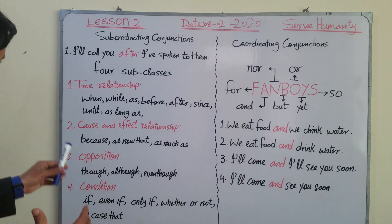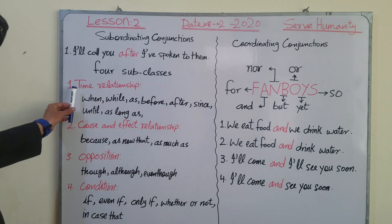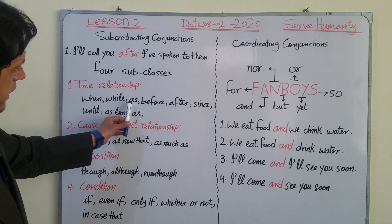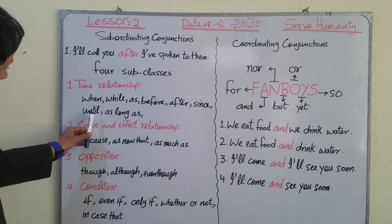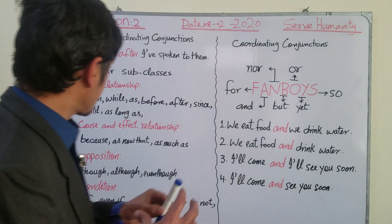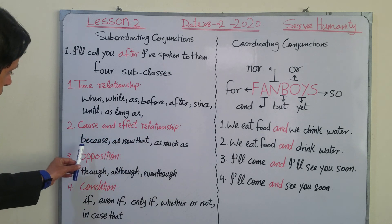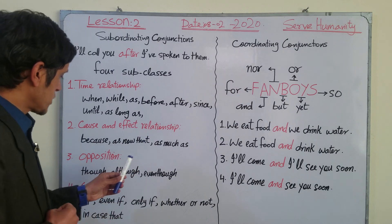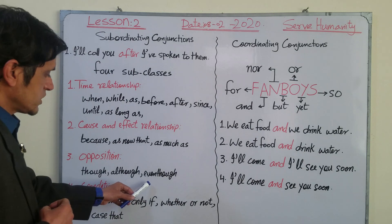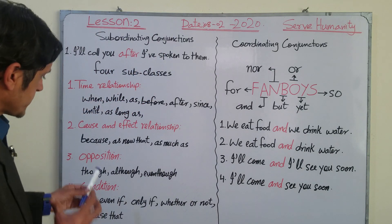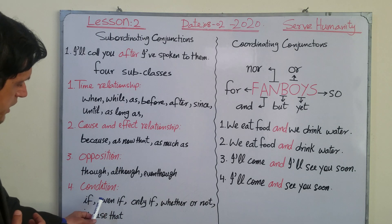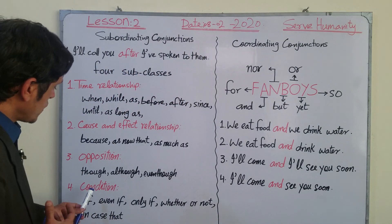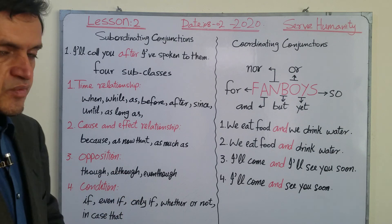Subordinating conjunctions have four subclasses. Number one — time relationship: when, while, before, after, since, until, as long as. Number two — cause and effect: because, as, now that, as much as. Number three — opposition: though, although, even though. Number four — condition: if, even if, only if, whether or not, in case. These are all examples of subordinating conjunctions.